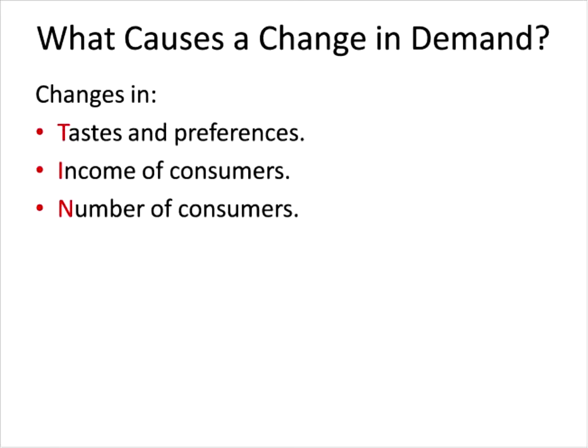The N in TINDER stands for number of consumers. As a population increases, demand shifts to the right, and as the number of consumers in a population decreases, demand shifts to the left.